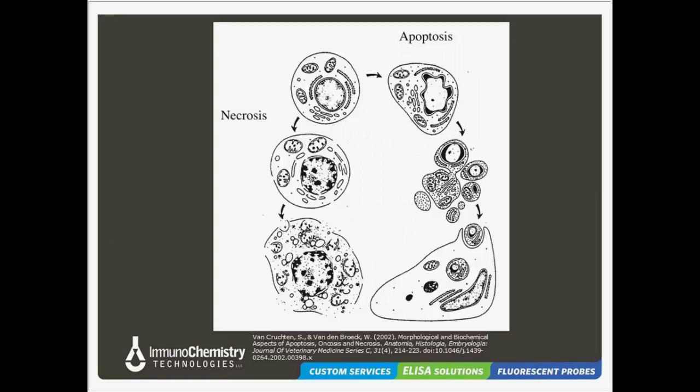Here's just a visual representation of the two processes side by side. On the right, you can see a shrinking of the cell and that blebbing and fragmentation. And on the left, you do see the swelling and the lysing of the cell.